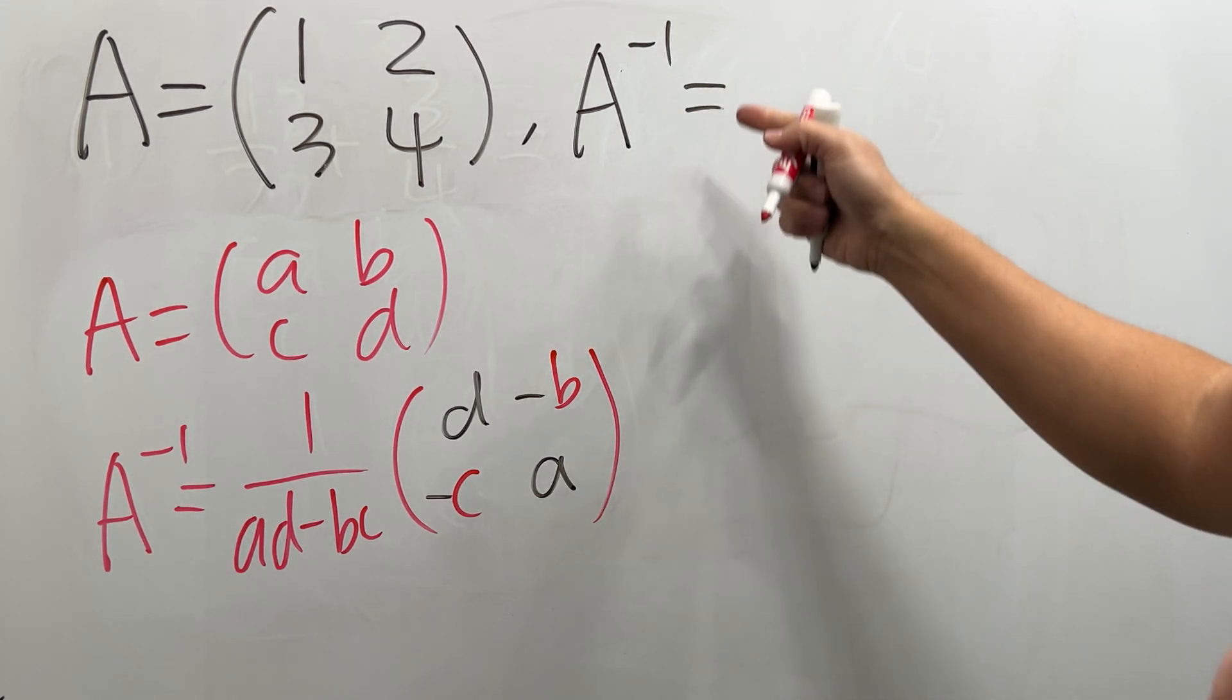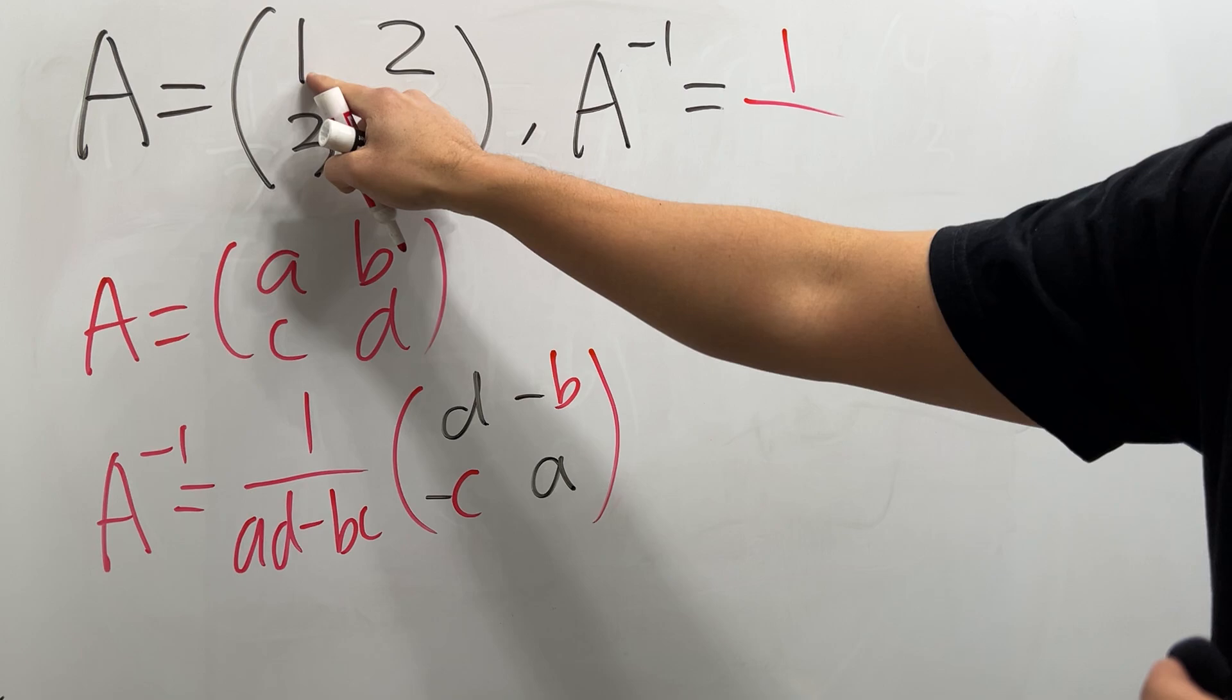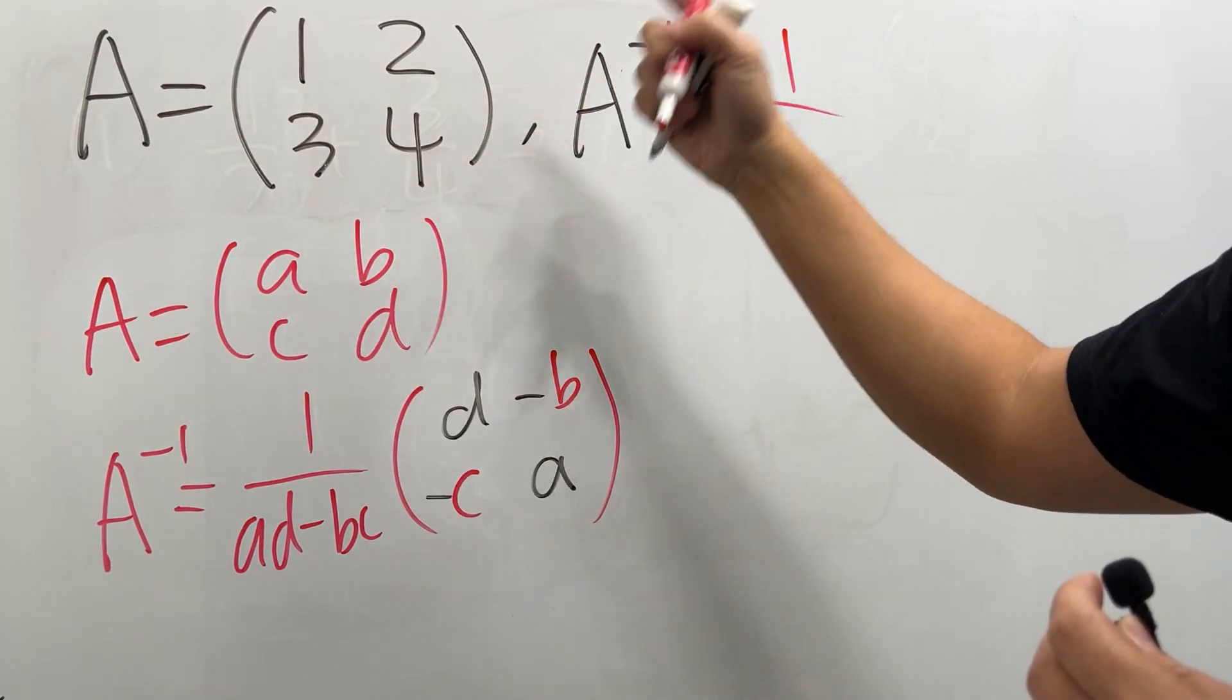All right, so now for this right here, the inverse of this A is going to be 1 over, okay, this times this is 4, this times this is 6, so 4 minus 6 is negative 2.